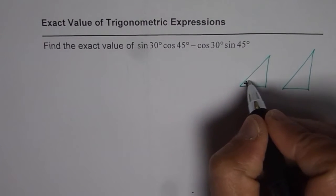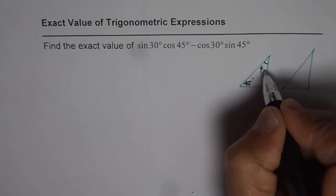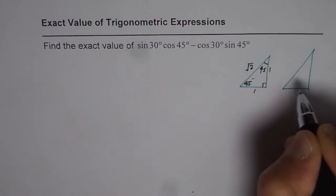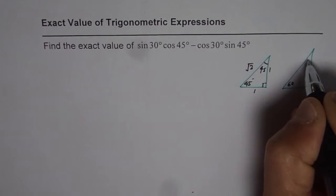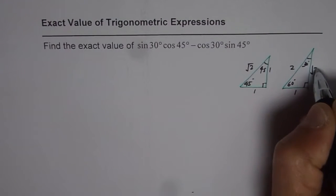So this is 45 degrees, that is 90, here again 45. The sides are 1, 1, square root 2. For 30-60-90 we have this triangle: 30, 60 and 90. The sides are 1, 2 and square root of 3.